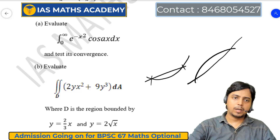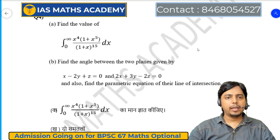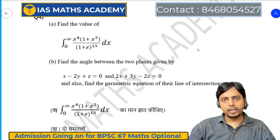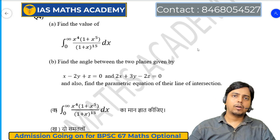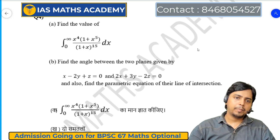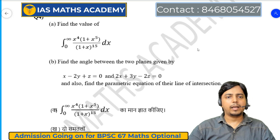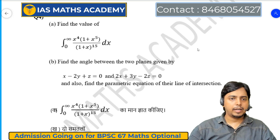Question number 4A में: find the value of this improper integral। इसके 2-3 methods होते हैं — beta function, gamma function, या complex analysis में contour integration। Section A में question पूछा है तो ज़्यादा chances हैं कि beta/gamma function के अंदर integral set करें और वहाँ से answer निकालें। Question 4B में: find the angle between the two planes x - 2y + z = 0 and 2x + 3y - 2z = 0। दोनों planes के normals के बीच का angle निकालना है, cos θ formula से theta की value मिल जाएगी।